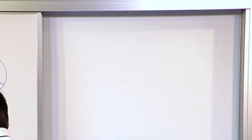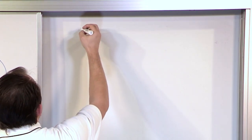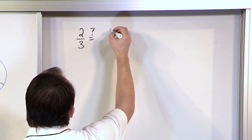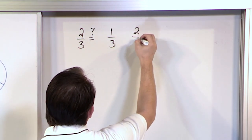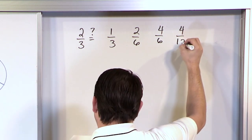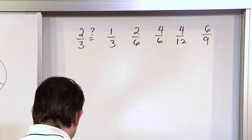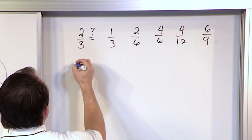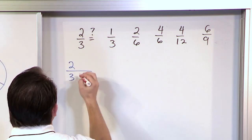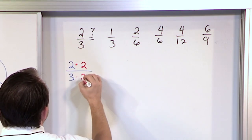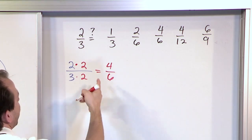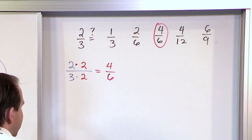The final one we're going to do, just to bring it home, is two-thirds. I want to figure out what it's equivalent to. The choices are one-third, two-sixths, four-sixths, four-twelfths, and six-ninths. I start with my two-thirds and I multiply by two — that's the easiest thing to multiply. Two times two is four, and three times two is six. So four-sixths — and four-sixths is in the list. So these two fractions are equivalent, even though they look a little bit different.